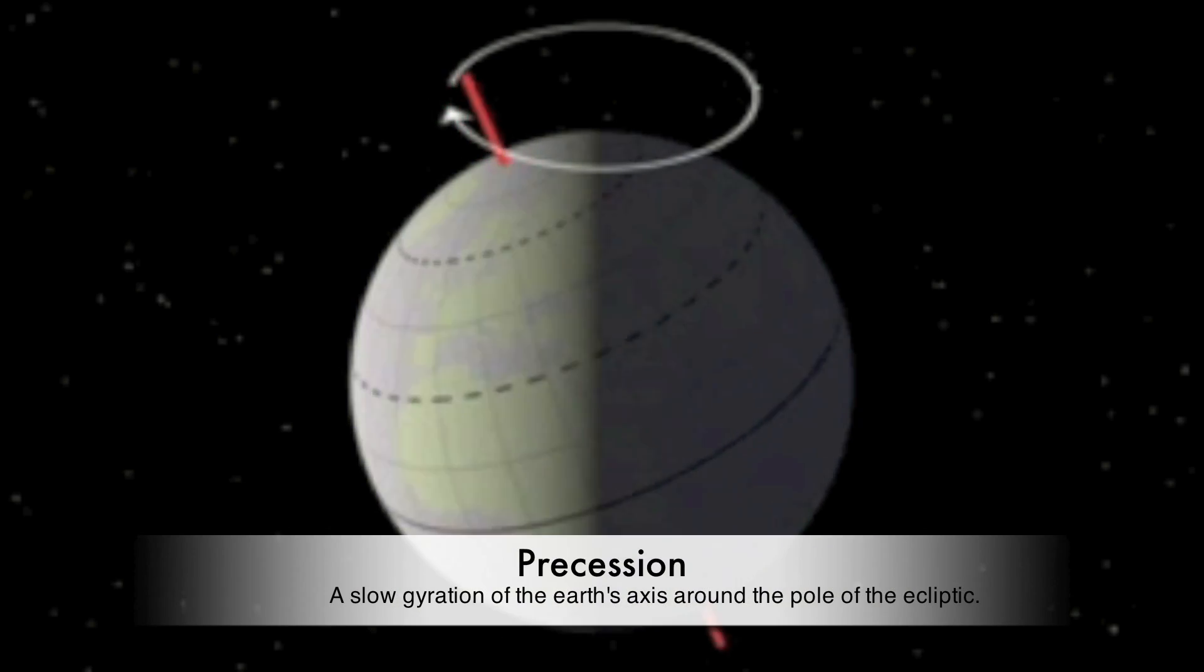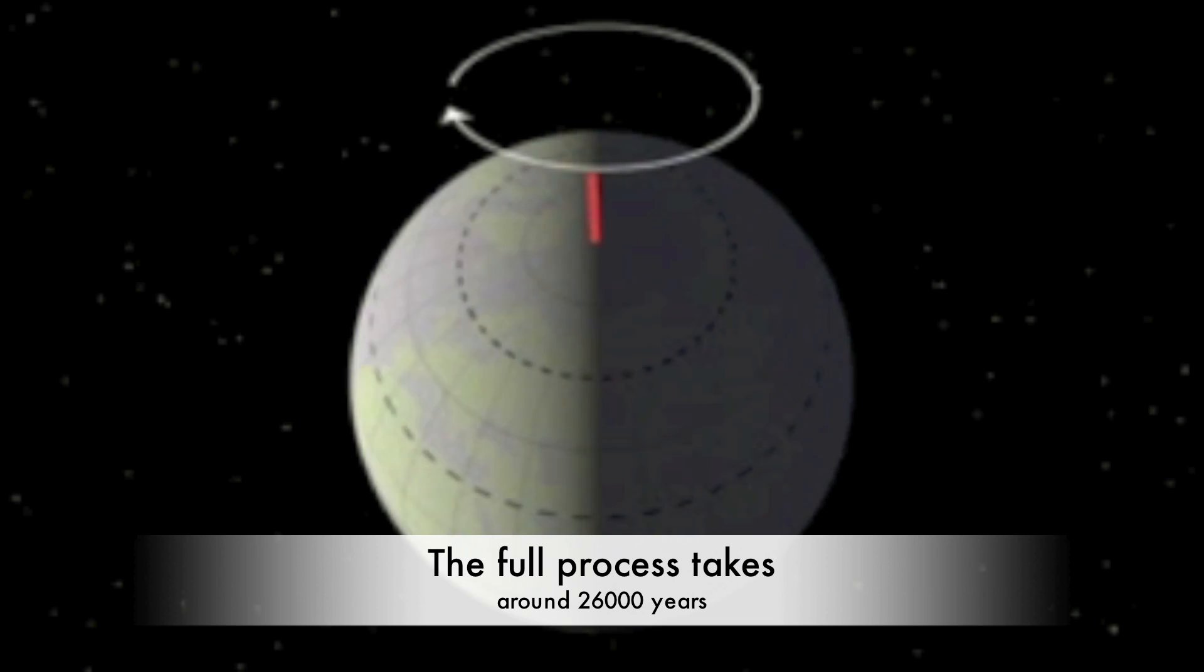Eventually though, due to the precession of Earth's axis, Polaris will no longer be the North Star. At around 14,000 AD, Vega will take over as our North Star.